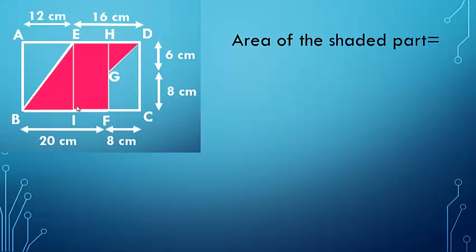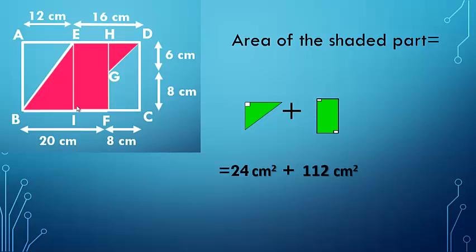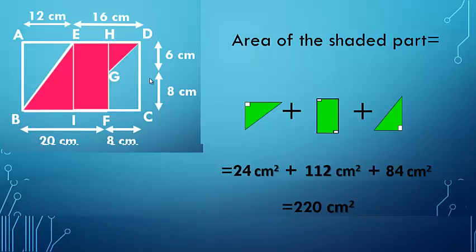Now to find the area of the shaded part, we add the areas of the three shapes: 24 + 112 + 84 centimeter square. The total is 220 centimeter square. So the area of the shaded part is 220 centimeter square.